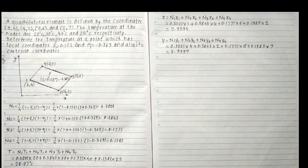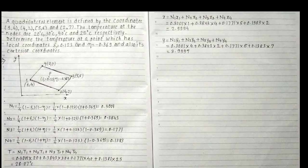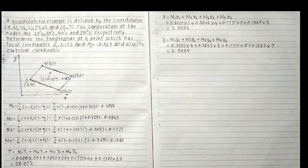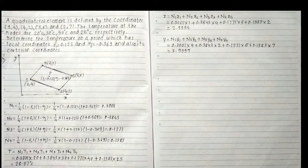Now let's calculate the shape function N1. N1 is given by (1/4)(1 - zeta)(1 - eta), which equals (1/4)(1 - 0.123)(1 - (-0.369)) = (1/4)(0.877)(1.369). So N1 is equal to 0.3843.